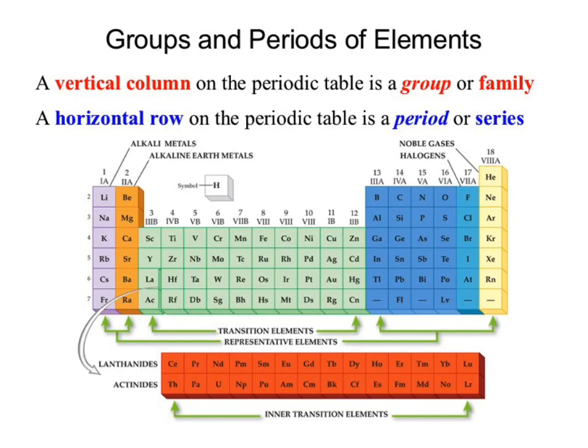So we look at a periodic table. The periodic table is laid out like a grid — not a perfect grid; there are some weird holes and spots missing, and we'll discuss why when we know more about its organization. If we look at it as just a blanket grid, we can break it down into two axes: vertical and horizontal. The vertical axis is known as a group or a family — important names to recognize.